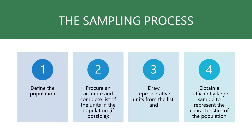Several steps are involved in the sampling process. A researcher must define the population, procure an accurate and complete list of the units in the population if possible, draw representative units from the list, and obtain a sufficiently large sample to represent the characteristics of the population.